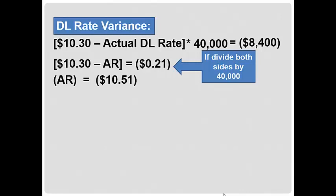So negative actual rate is equal to negative $10.51 when I move the $10.30 to the other side of the equation. Convert both sides to a positive number and we find that the actual rate is $10.51. So we have solved for the actual direct labor rate.